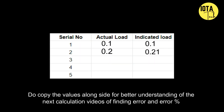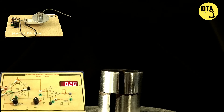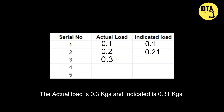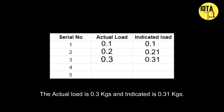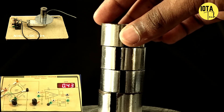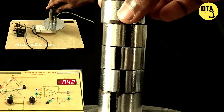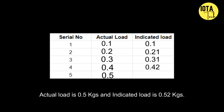Do copy the values alongside for better understanding of the next calculation videos on finding error and error percentage. The actual load is 0.3 kilograms and the indicated load is 0.31 kilograms. The actual load is 0.4 kilograms and the indicated load is 0.42 kilograms. The actual load is 0.5 kilograms and the indicated load is 0.52 kilograms.